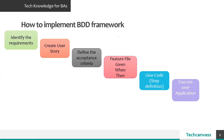Now let's talk about how we implement the BDD framework. Business stakeholders identify a business requirement, then a user story is created. The three amigos together discuss and define the acceptance criteria, which is then put down in a structured given-when-then format called a feature file. Using this feature file, glue code is written to define the step definitions. This is then executed over the application. The outcome is executable living documentation — on a click of a button we can see whether scenarios passed or failed via red or green light reports. This living documentation is readable and understandable even to non-technical people.